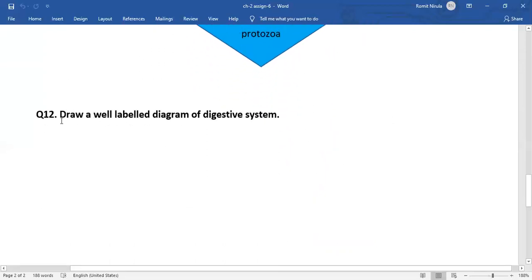Last question is: Draw a well-labeled diagram of digestive system. So draw it neatly and label all the parts of digestive system, all the organs of digestive system. That's all, thank you so much.